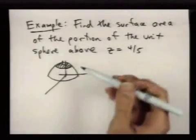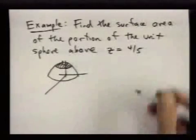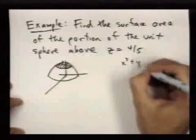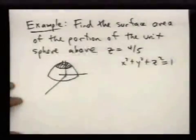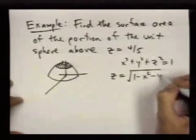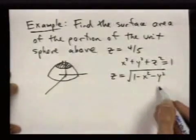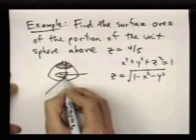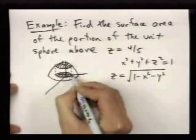So first, I need to express this surface as the graph of a function. Well, the equation of the unit sphere is x squared plus y squared plus z squared equals 1. So we can write an equation for the top half as z equals square root of 1 minus x squared minus y squared. So this is the function we have in mind. And we want to find the surface area of the graph of this function over this region here. So it's sort of the shadow of the cap down below.